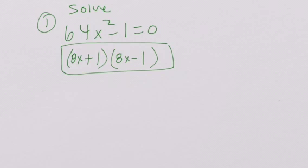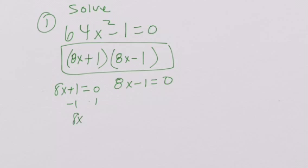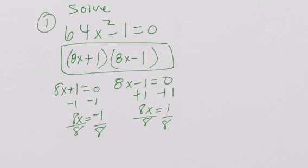If I'm going to solve, I'm going to have 8x plus 1 equal to 0, and 8x minus 1 equals 0. Zero pair out the 1: 8x equals negative 1, divide by 8. Then zero pair out the 1 on the other side: 8x equals 1, divide by 8. So my roots are going to be negative and positive 1/8.